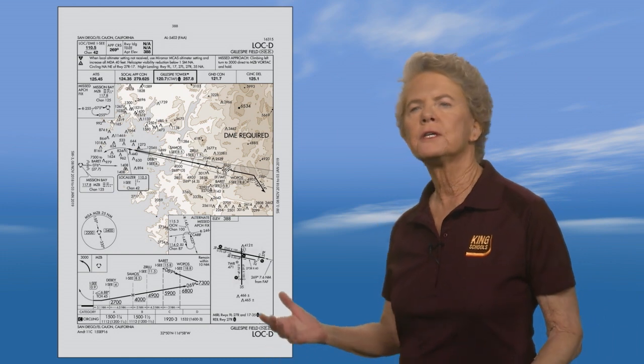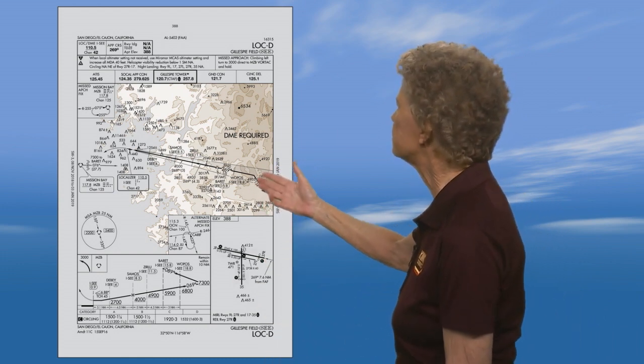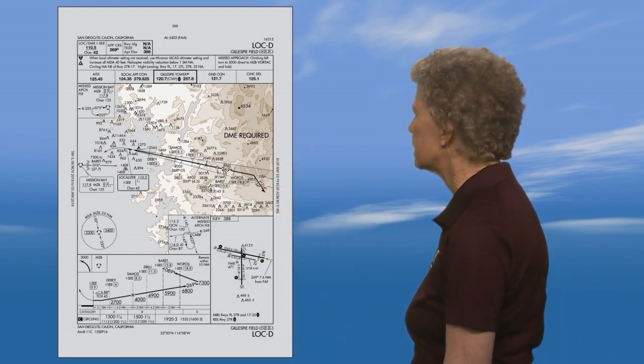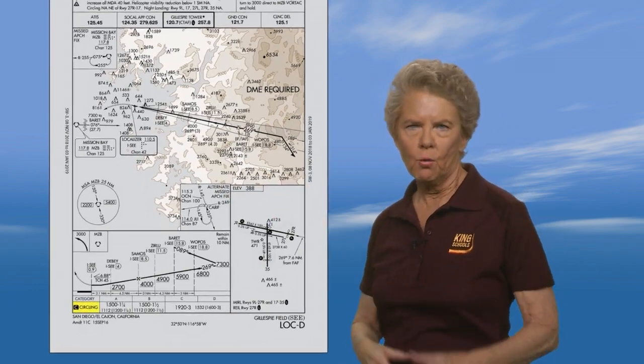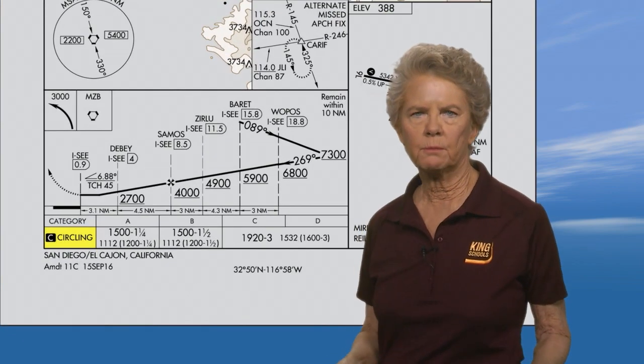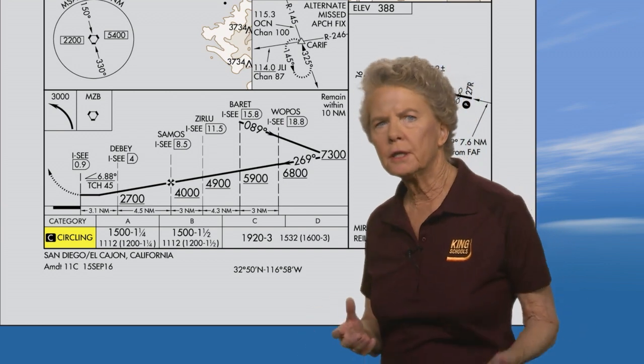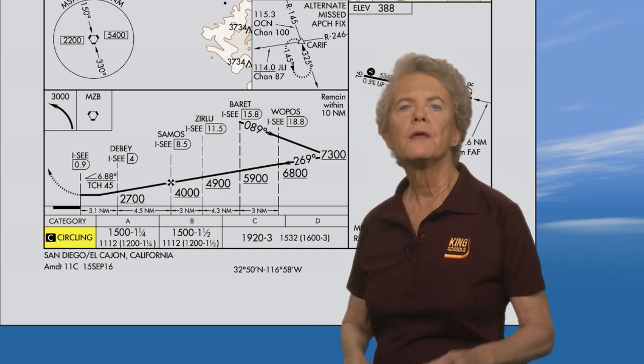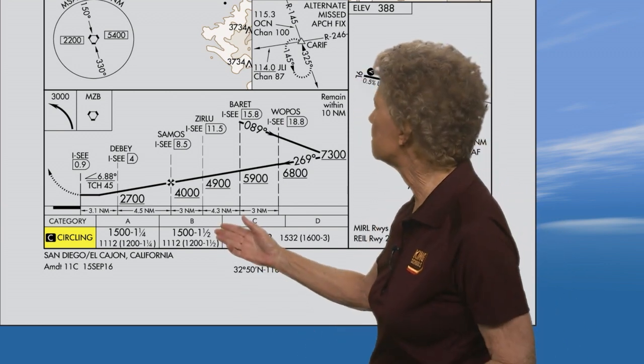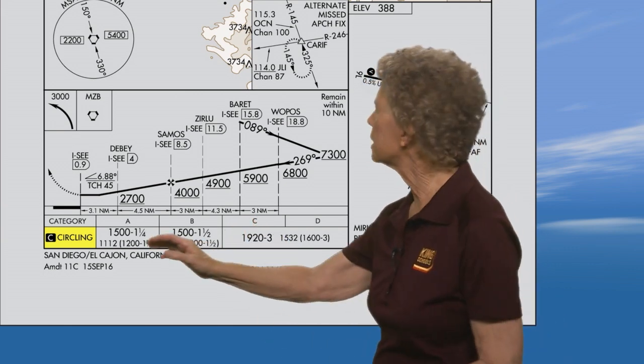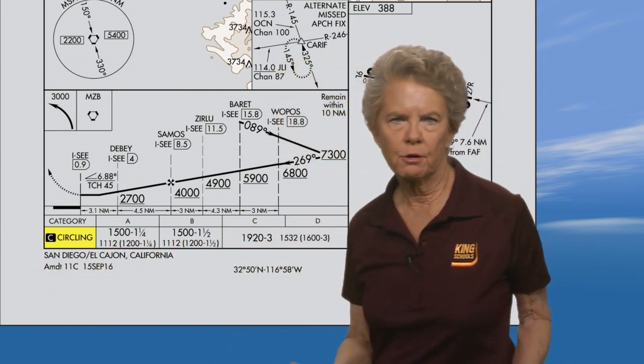Take a look now at this localizer delta approach to Gillespie Airport in San Diego. On this particular approach, when you take a look down in the minimum section, you find that unlike the other approaches we've looked at, there are no straight-in minimums shown. There are only circling minimums shown on this approach.